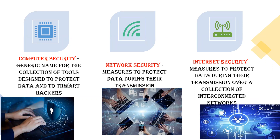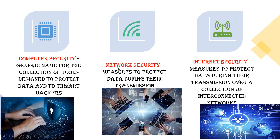Now going deep into each definition, the three definitions we clearly need to know are computer security, network security, and internet security. Seeing the diagram, computer security is nothing but protecting the data from hackers. You have a system with many files of data stored in it, and you protect each and every file with a password so that hackers cannot hack the data stored in the system.